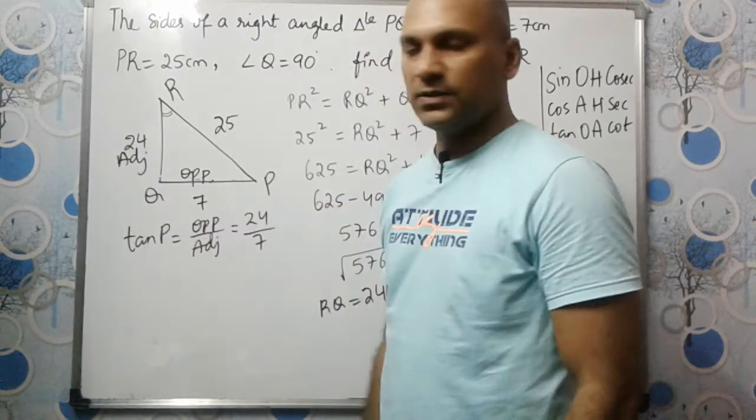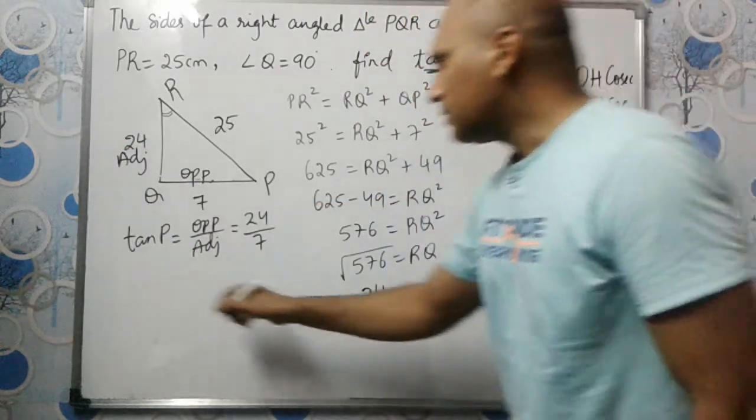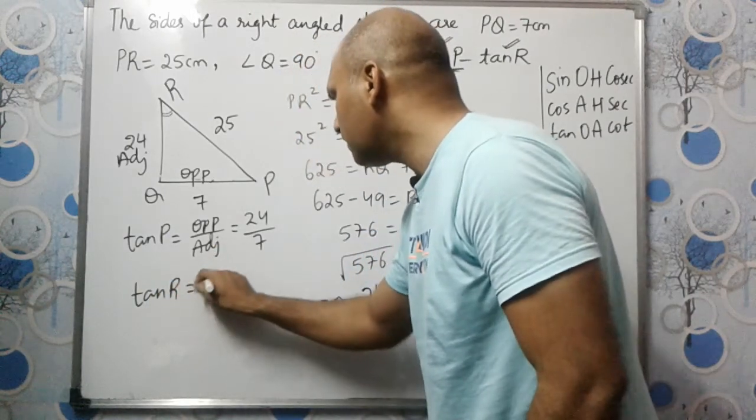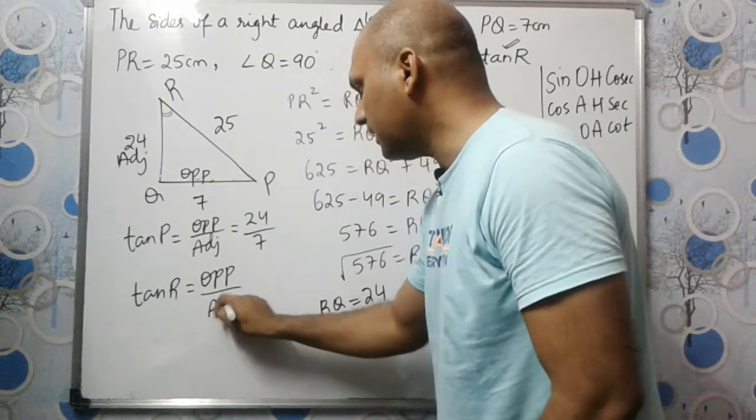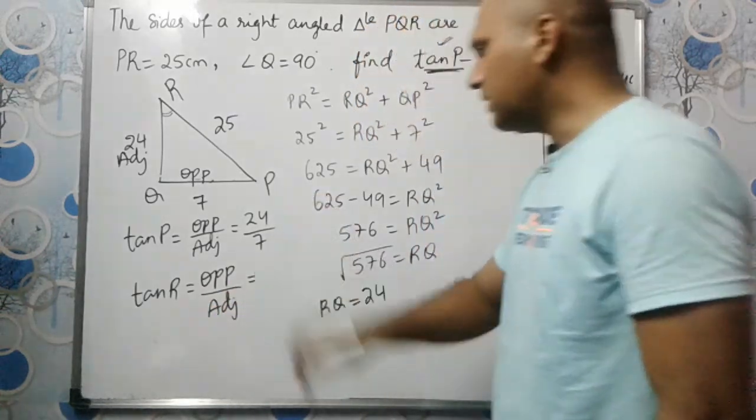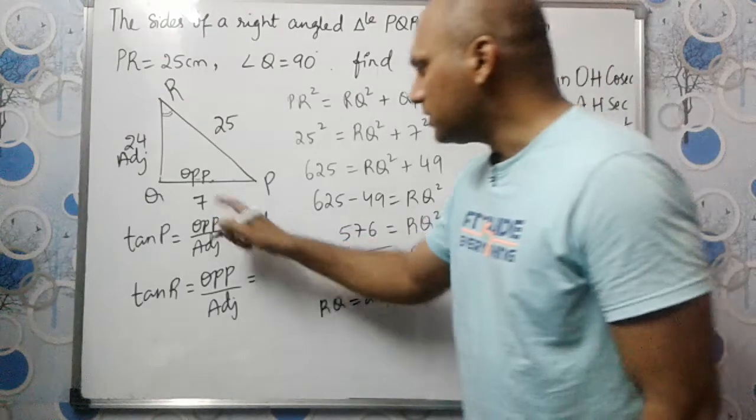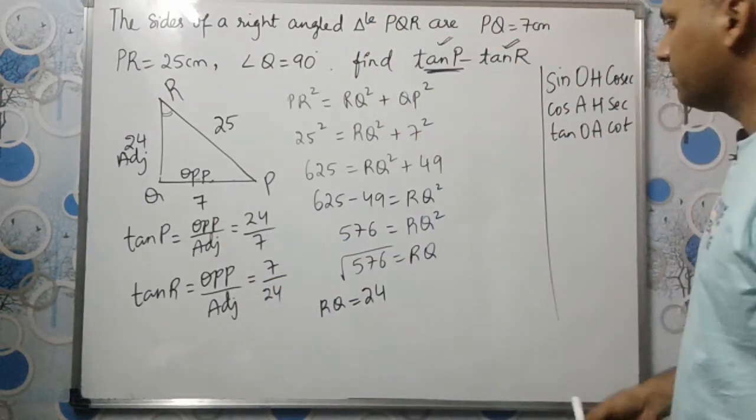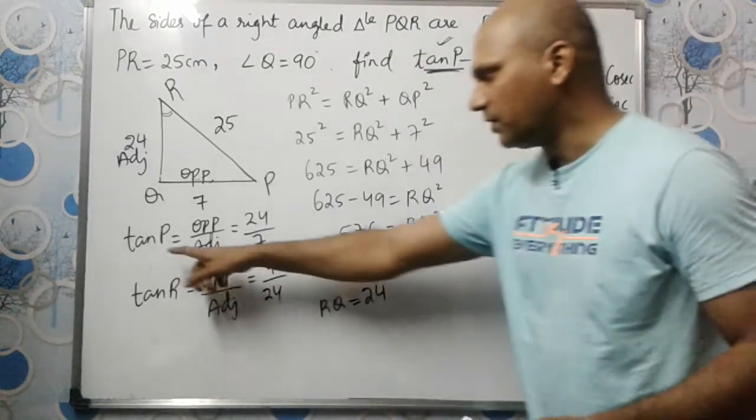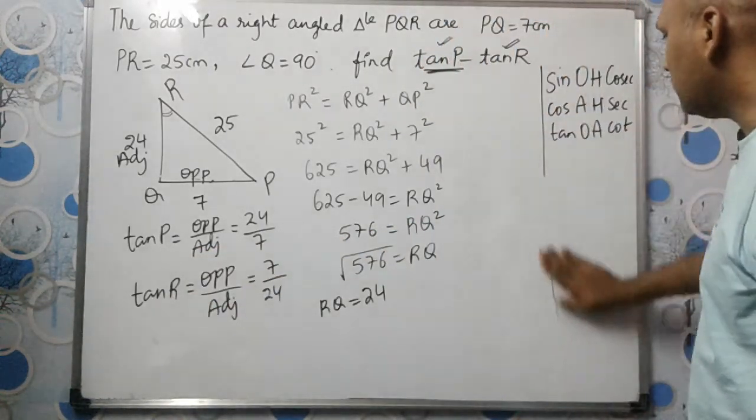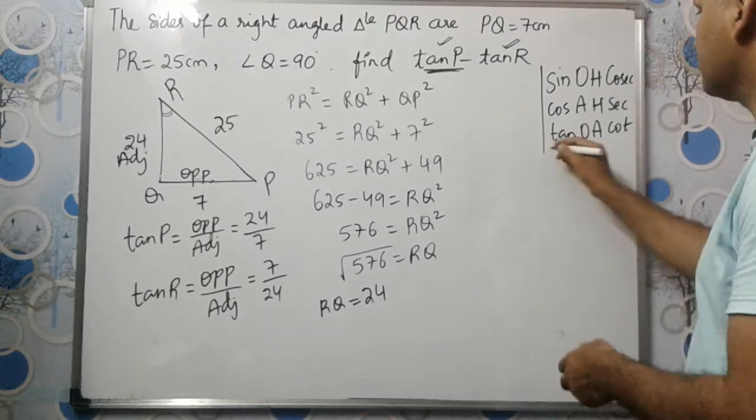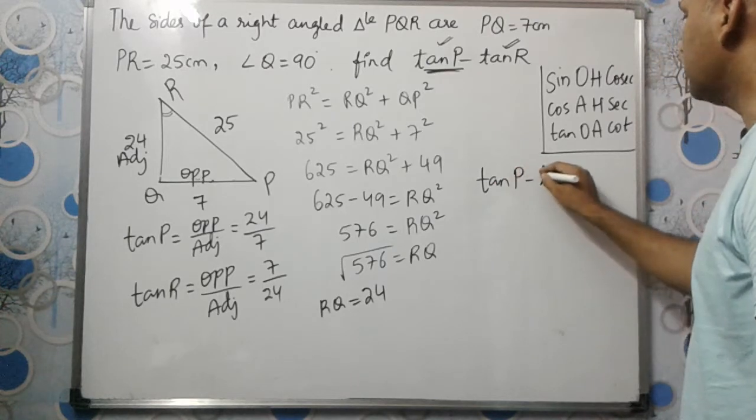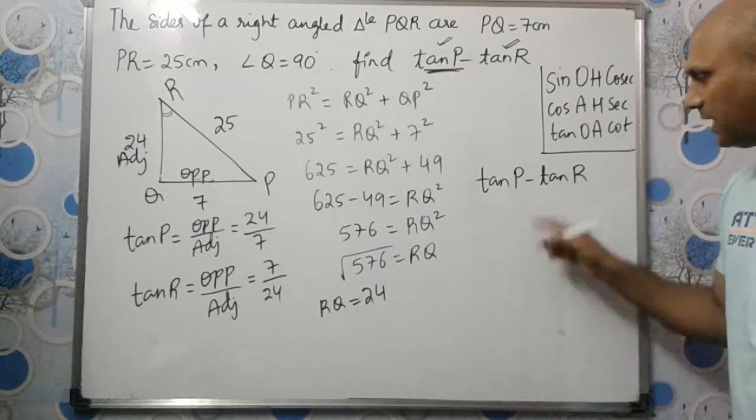So tan R is opposite divided by adjacent. Opposite is 7, adjacent is 24. I hope you understood how we got tan P and tan R. Now we need to find tan P minus tan R.